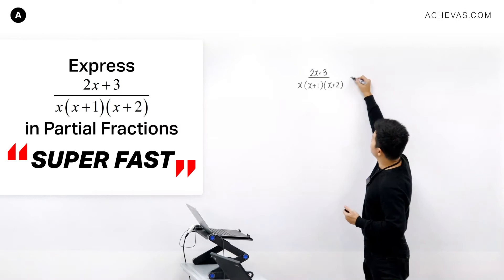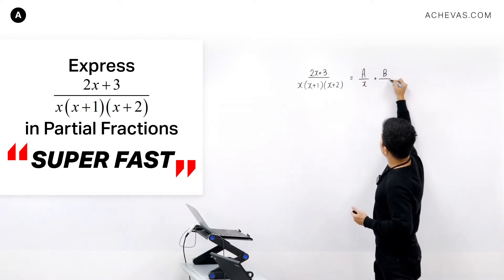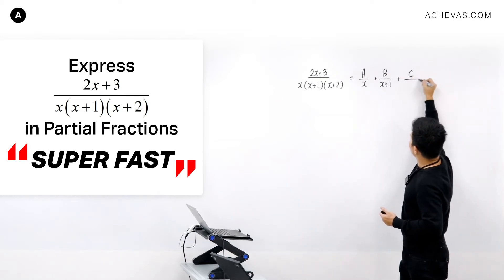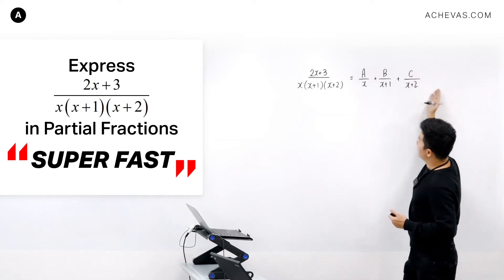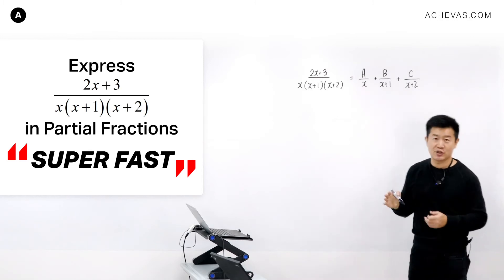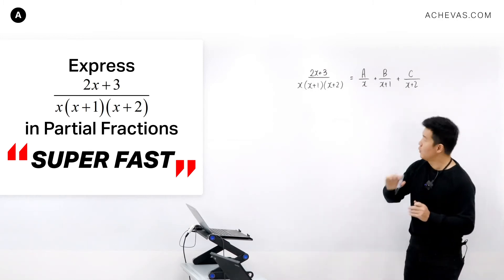First, we will try to re-express this as A over X plus B over X plus 1 plus C over X plus 2. And if you realize that the denominator consists of only linear expressions, what you can do is this.